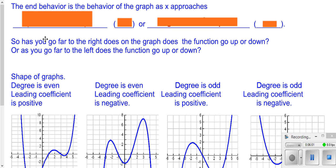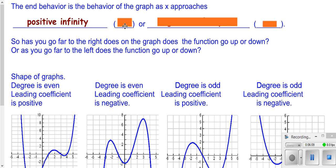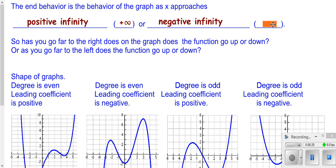Now we want to look at end behavior — what happens to your function as you go far to the right or far to the left. If your function is going up as you go far to the right, it's heading toward positive infinity. If it's going down as you go far to the right, that would be negative infinity. We need to look at these functions and decide what happens going far right and far left.